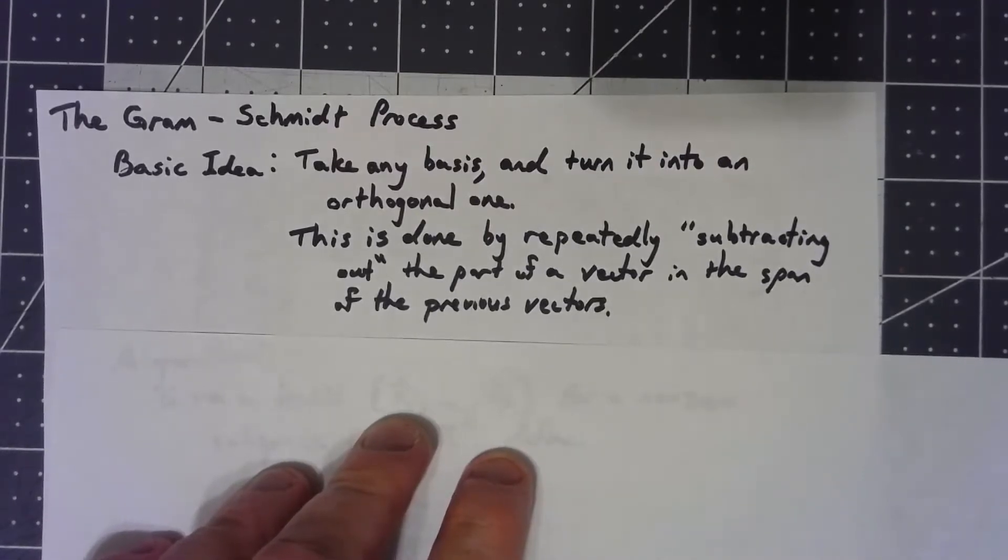And the way we do this is basically by doing projections. Another important idea that we've talked about is that when we do an orthogonal projection, the remainder, what we get when we subtract the part that's in the subspace from the original vector, is orthogonal to the subspace. Right away that's telling us how we can create new orthogonal vectors.